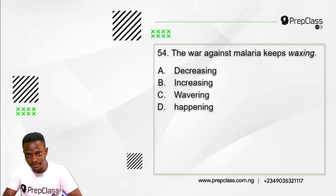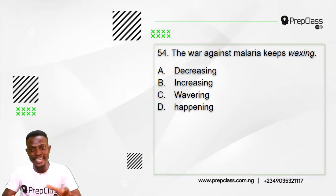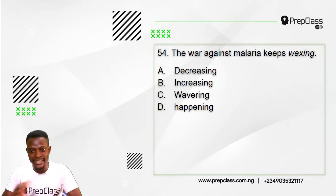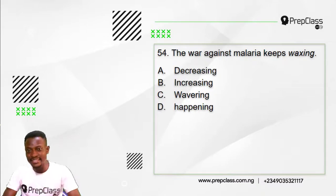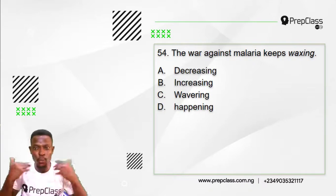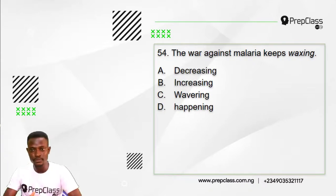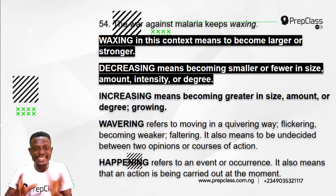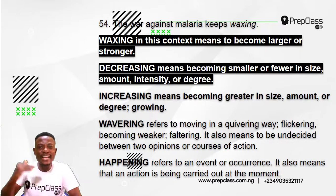Moving on to question 54. Remember we have to select the option opposite in meaning to the word or phrase in italics. Question 54 reads: the war against malaria keeps waxing. Option A: decreasing. Option B: increasing. Option C: wavering. Option D: happening. The word in italics here is 'waxing.' 'Waxing' in this context means to become larger or stronger.